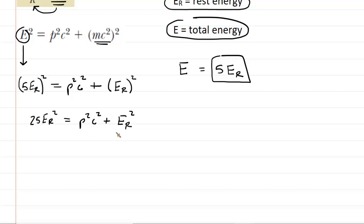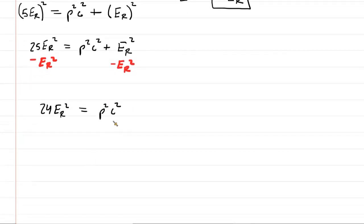Now we have like terms on each side, the E sub R squareds. So we would subtract E sub R squared from both sides. On the left side, you're going to end up with just 24 E sub R squared. Remember, your goal is to isolate the momentum, which is p. So you'd next want to divide both sides of the equation by c squared.